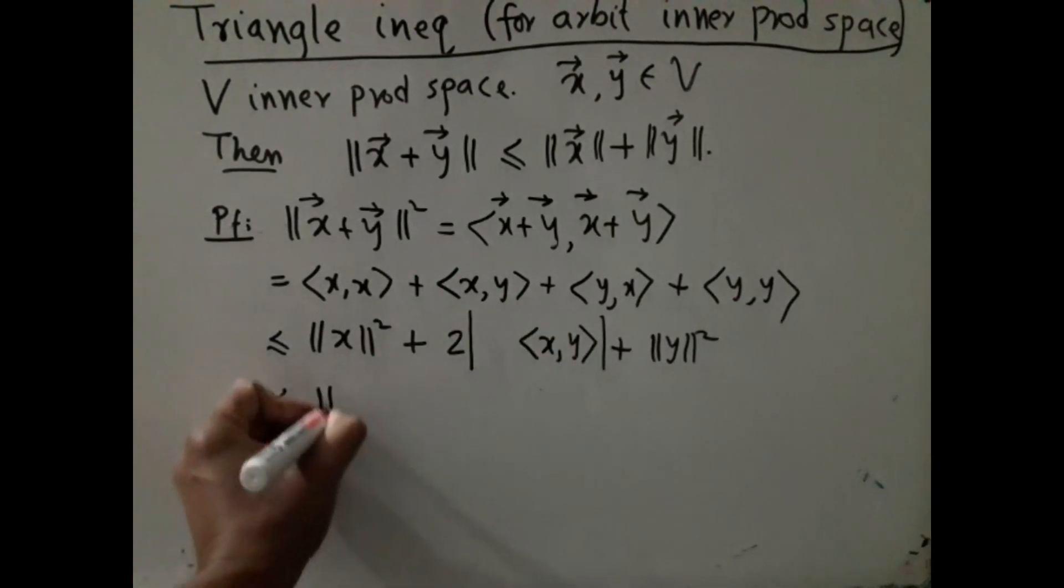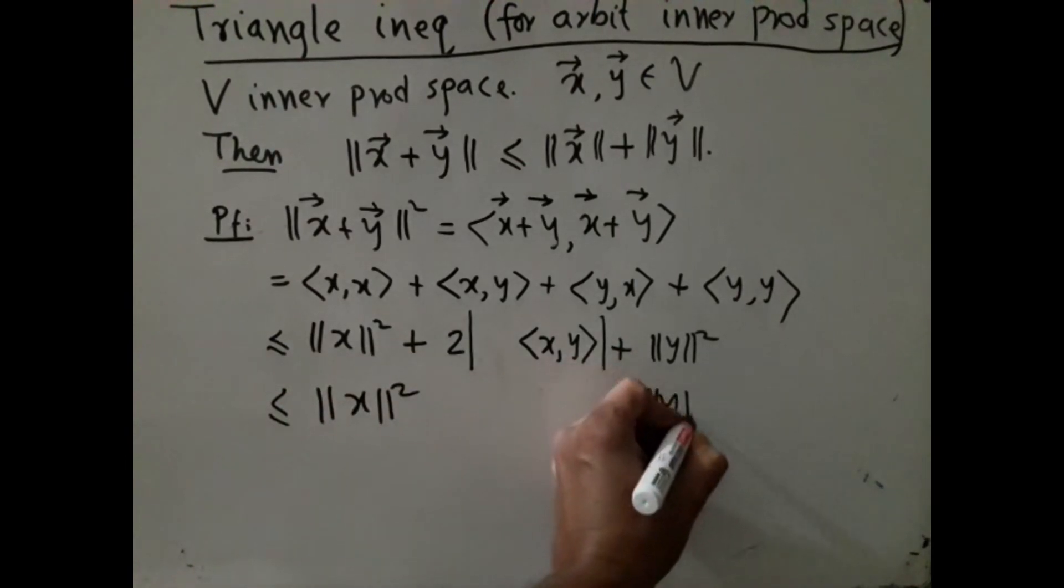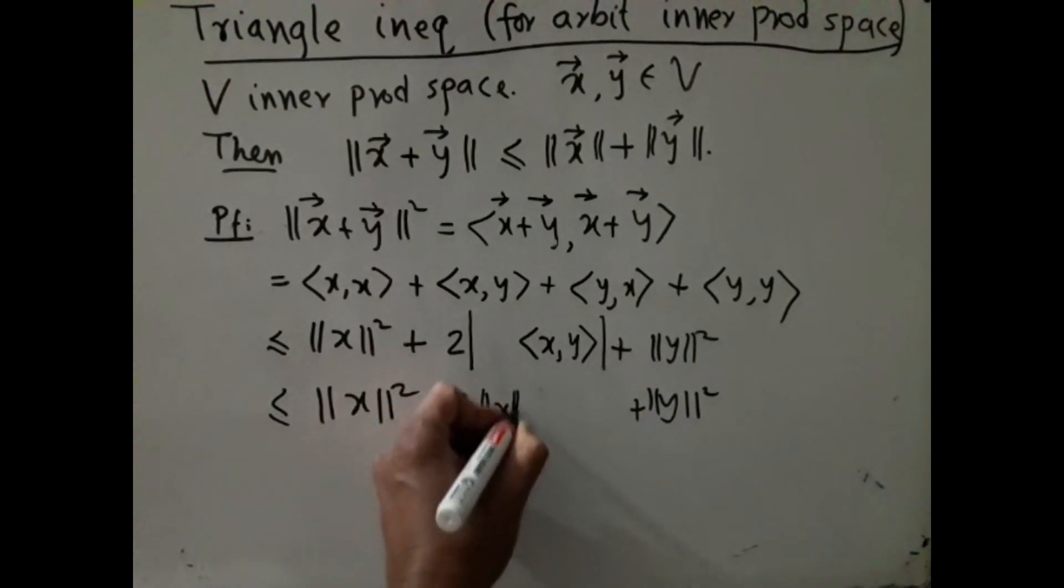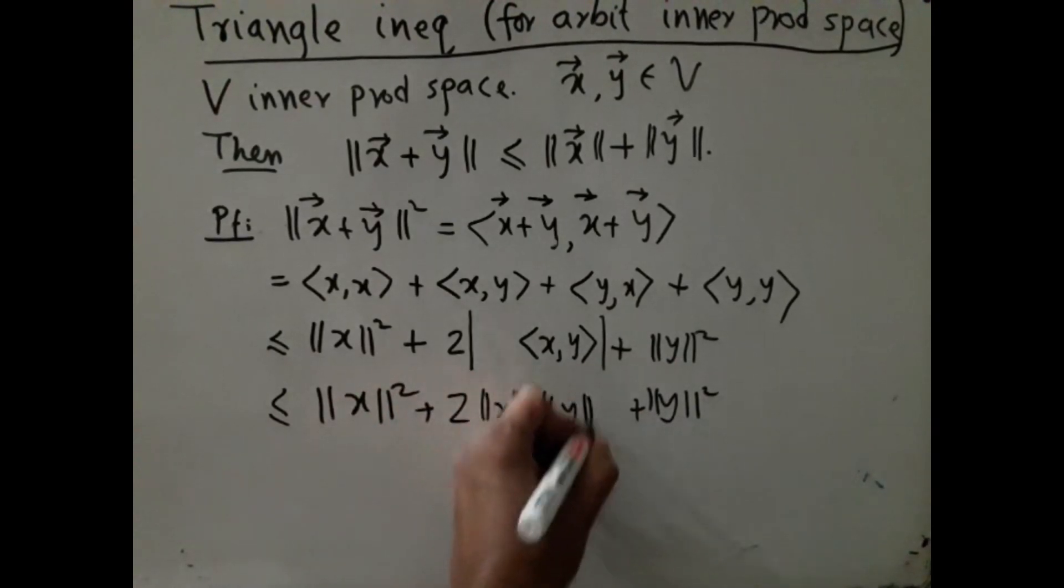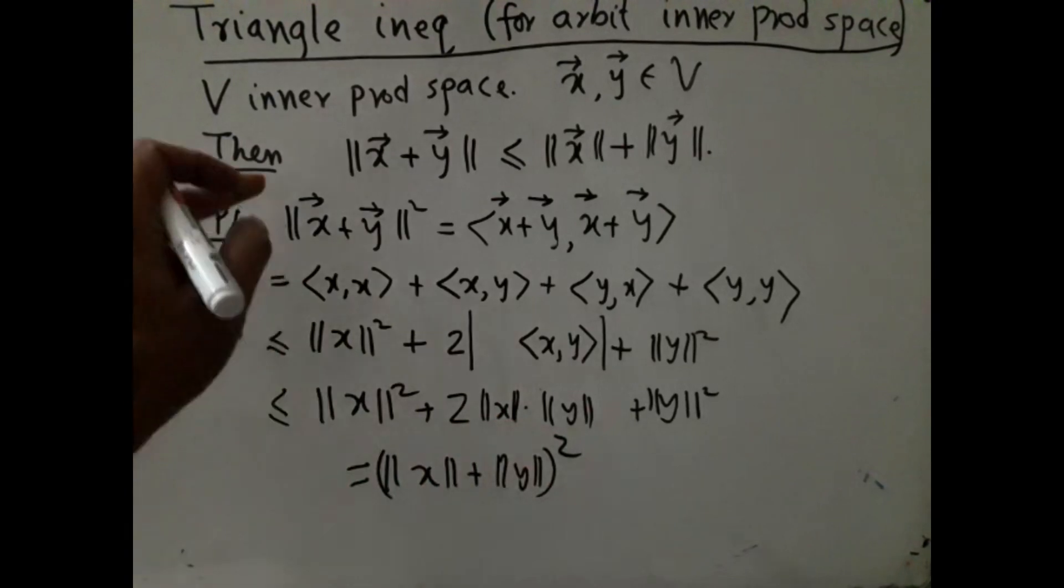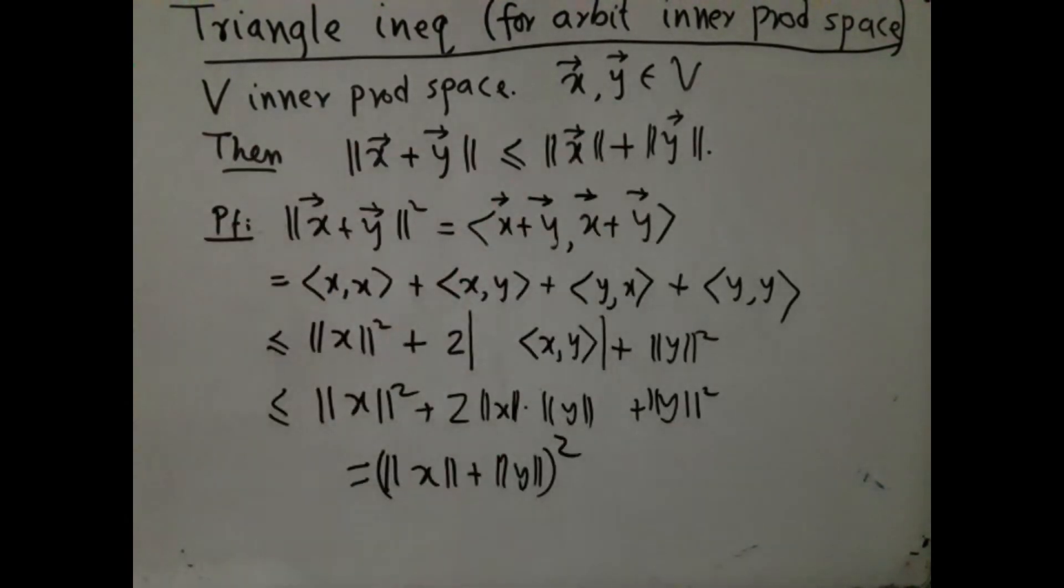And this is our familiar a^2 + 2ab + b^2 form. So this is (||x|| + ||y||)^2. You just take non-negative square root and you immediately get the triangle inequality that we were trying to prove.